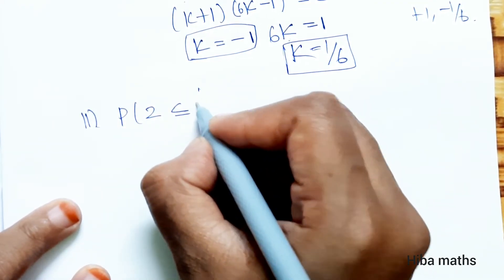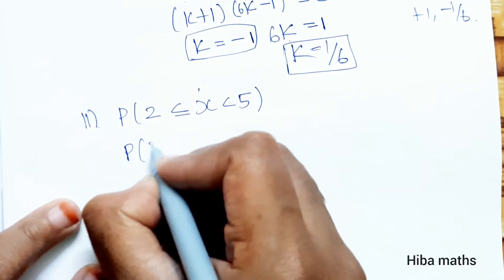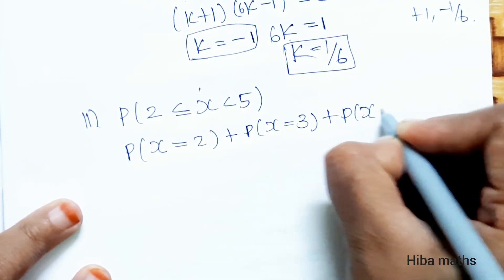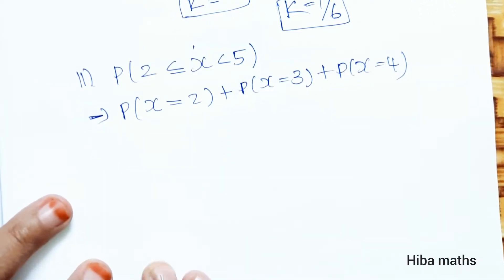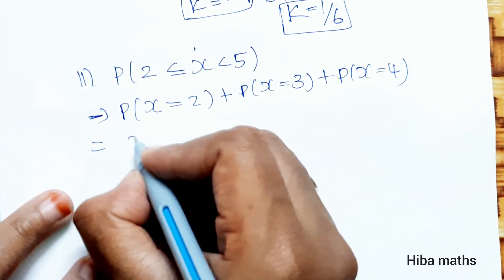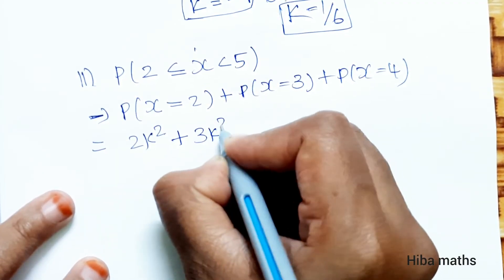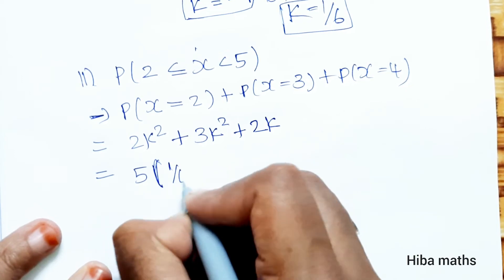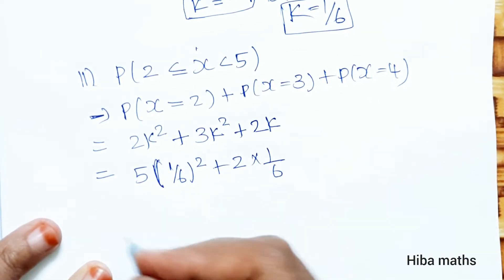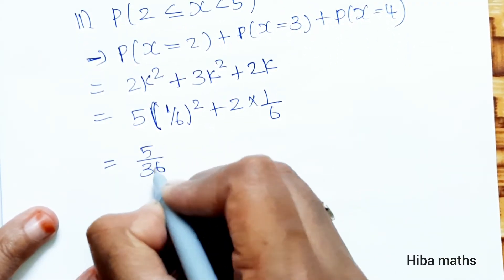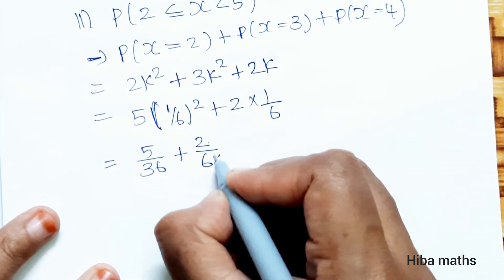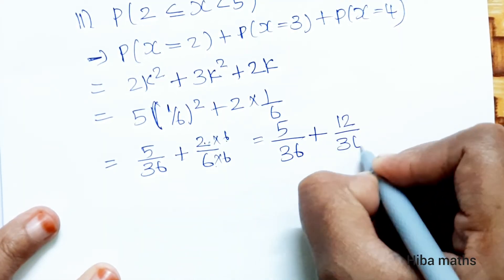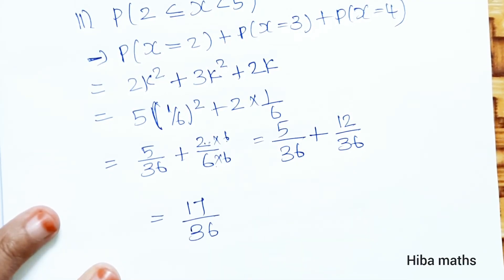For part 2, find P(2 ≤ X < 5). We add P(X=2) + P(X=3) + P(X=4): that is 2k squared plus 3k squared plus 2k. Substituting k = 1/6: 5 by 36 plus 2 by 6, which gives 5/36 plus 12/36 = 17/36.